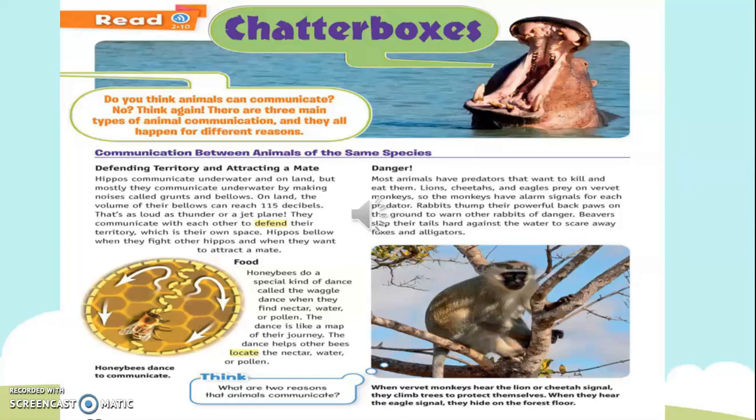Food. Honeybees do a special kind of dance called the waggle dance when they find nectar, water, or pollen. The dance is like a map of their journey. The dance helps other bees locate the nectar, water, or pollen. Danger. Most animals have predators that want to kill and eat them. Lions, cheetahs, and eagles prey on vervet monkeys, so the monkeys have alarm signals for each predator. Rabbits thump their powerful back paws on the ground to warn other rabbits of danger. Beavers slap their tails hard against the water to scare away foxes and alligators. When vervet monkeys hear the lion or cheetah signal, they climb trees to protect themselves. When they hear the eagle signal, they hide on the forest floor.